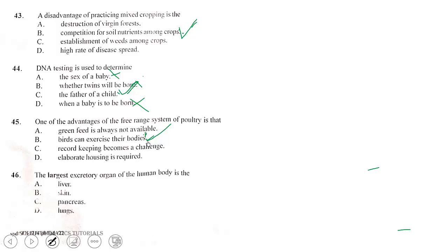Question 46. The largest excretory organ of the human body is the skin. Question 47. A flower with both stamens and carpels is said to be a bisexual or perfect flower or hermaphrodite. That's option A. If the flower lacks the stamens it is called carpellate, but if it lacks the carpels it is called staminate. That flower is unisexual or imperfect. Question 48. The material used for propagating cassava is stem cutting.